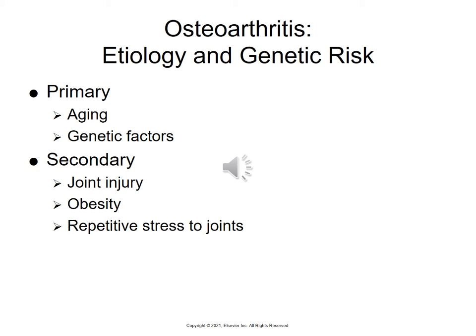Etiology and genetic risk: the primary concern is aging as well as genetic factors, particularly affecting weight-bearing joints, the hands, and the spine. Secondary osteoarthritis includes joint injuries, obesity, and repetitive stress to joints — such as in heavy manual labor, athletes performing the same movements repeatedly like football players, gymnasts, and runners. Other diseases that cause osteoarthritis include diabetes, Paget's disease, and sickle cell — all of these can cause degeneration.